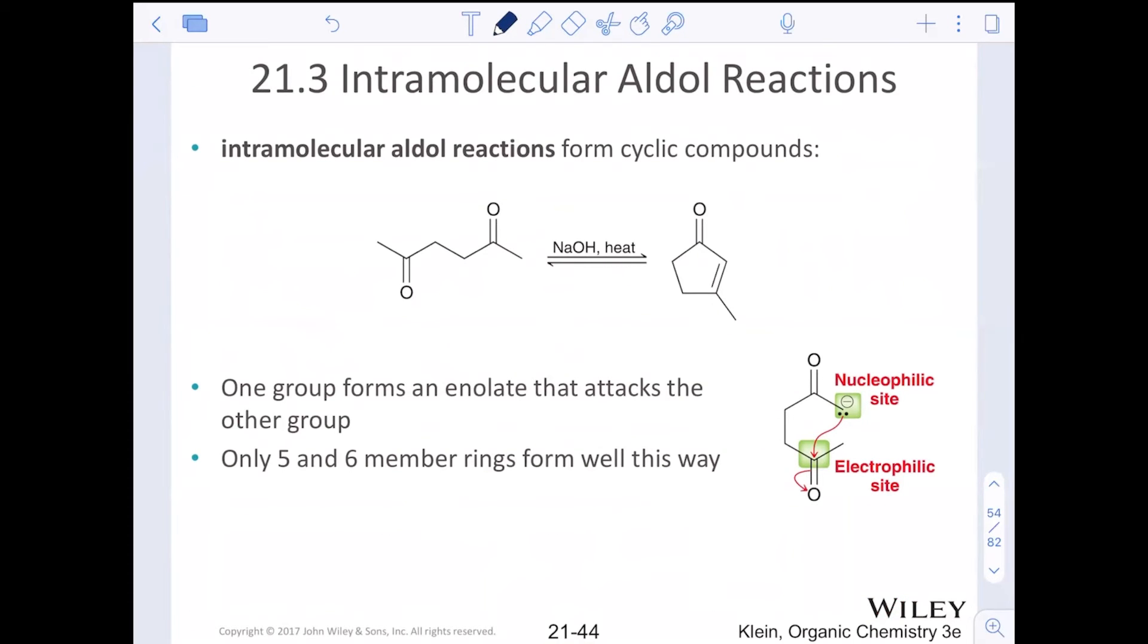Intramolecular reactions can definitely form cyclic compounds here. Usually it's only going to do it if you have a five or six membered ring. One group forms the enolate that attacks the other group. Typically symmetrical molecules are utilized. Alpha of one can then go and attack the carbon of the other carbonyl. One, two, three, four, five in between those two positions. One here was alpha, two, three, four, five. Here's beta for the unsaturated position.